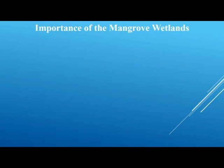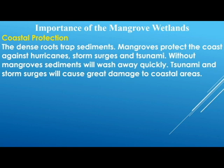Why are mangrove wetlands important? First, coastal protection. The dense roots trap sediments. Mangroves protect the coast against hurricanes, storm surges, and tsunamis. During hurricanes, mangroves cut down the speed of the wind, so hurricane winds are not as powerful after crossing the mangrove. They break the wind speed of the hurricane and reduce the storm surge. Without mangroves, storm surges can create havoc along the coast, but with mangroves the power of those surges is cut down.